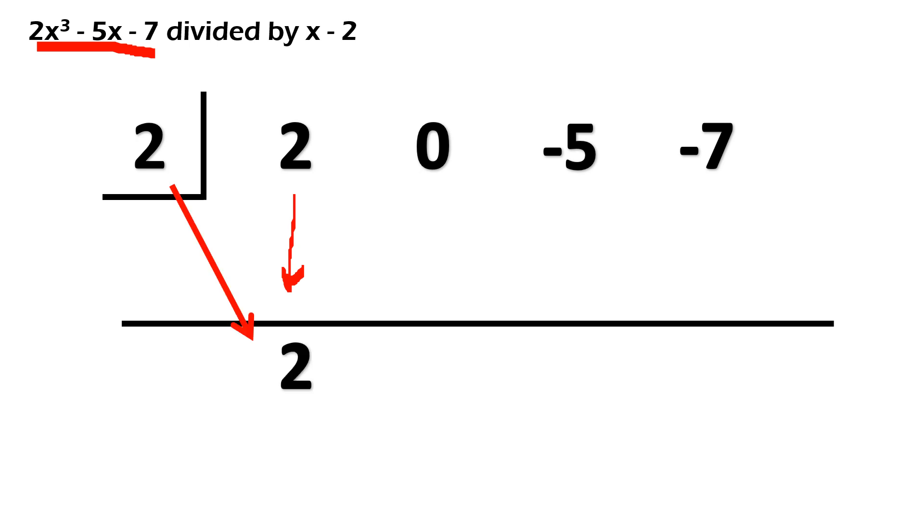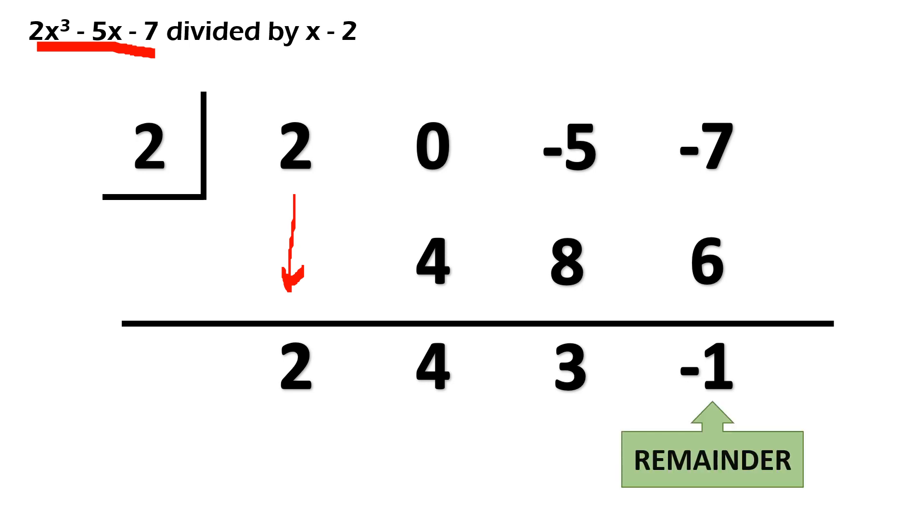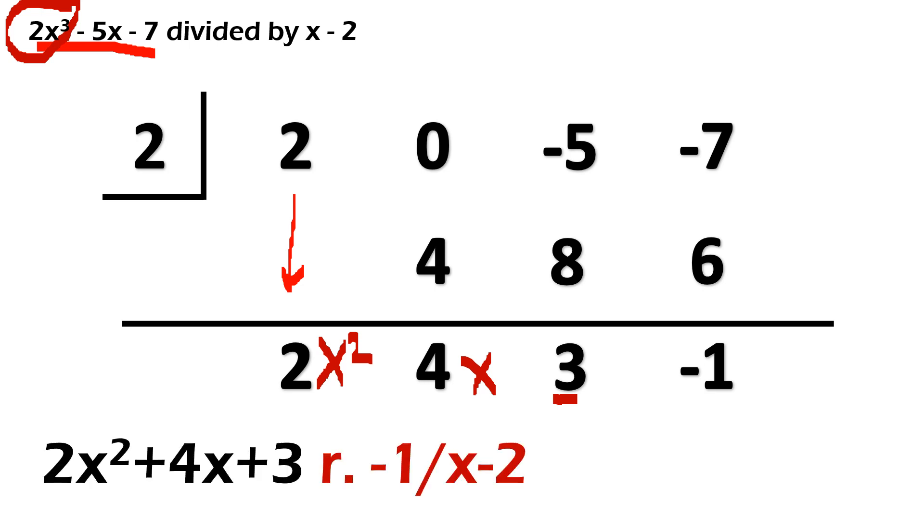So, node is to multiply. 2 times 2, that will give us 4. 0 plus 4 is 4. Multiply ulit. 2 times 4, that's 8. Negative 5 plus 8 is 3. 2 times 3 is 6. And then, negative 7 plus 6 will give us negative 1. So, yung negative 1, that's our remainder. At kung titignan nyo yung ating dividend, meron, nag-start siya sa degree 3. So, sa ating quotient, sa final answer natin, magsisimula tayo sa X squared, followed by X, and then our constant. Tapos yung remainder. So, final answer natin dito is 2X squared plus 4X plus 3 with the remainder negative 1 over X minus 2.